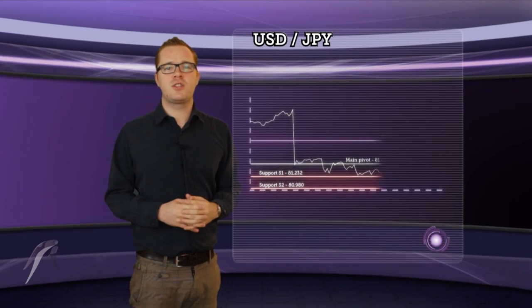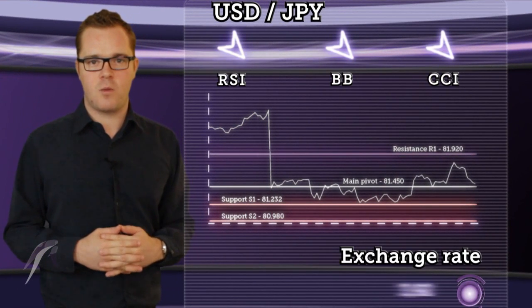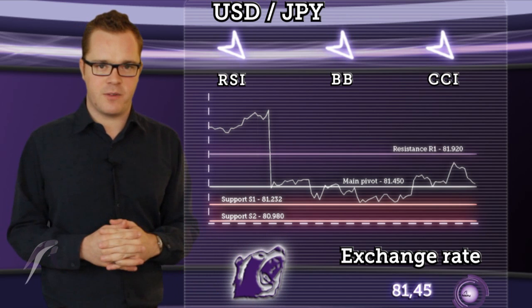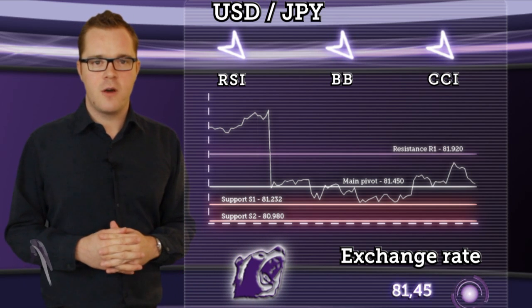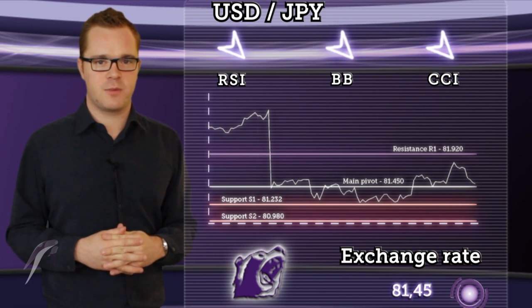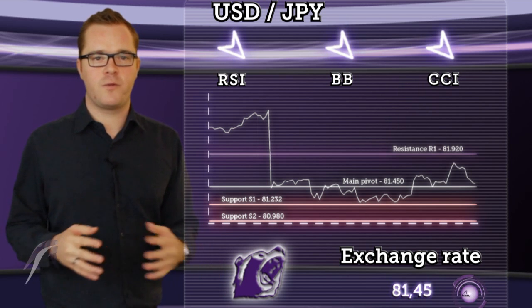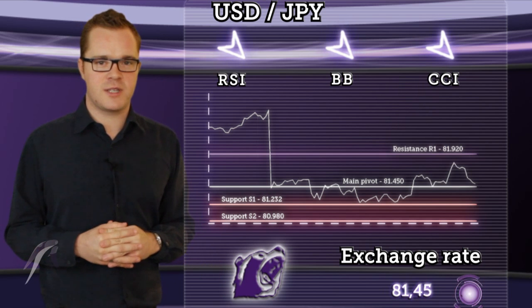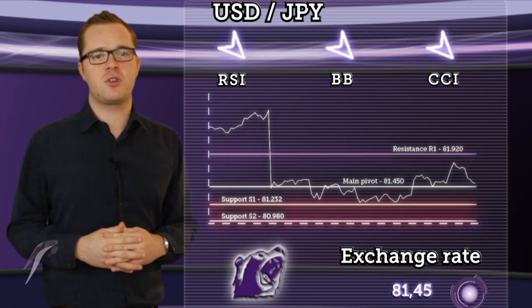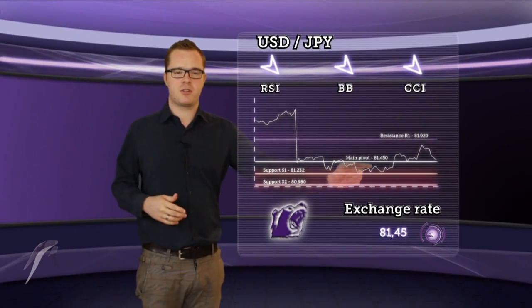Moving on to the dollar-yen, it seems it was limited below resistance R1 and will retest the daily pivot soon. A fall below this level will be suggesting a decline towards S1 support. We're expecting price will fall deeper towards S2, where we can expect a rebound. A vast majority of our indicators expect a bearish trend.